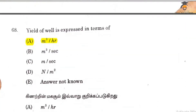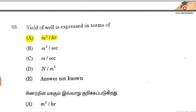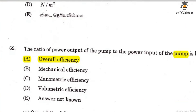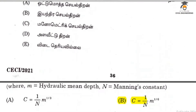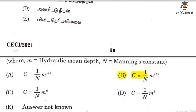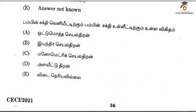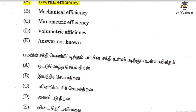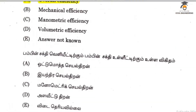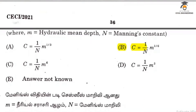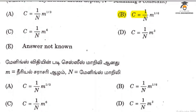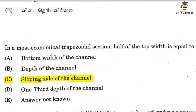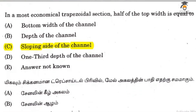Yield of a well is expressed in terms of cubic meter per hour. The ratio of output power to input power is overall efficiency. Manning's formula: C equals 1 by N multiplied by R to the power 1/6.